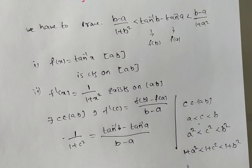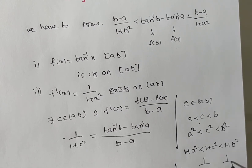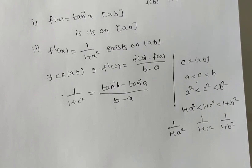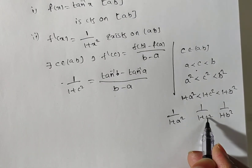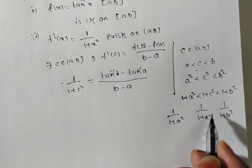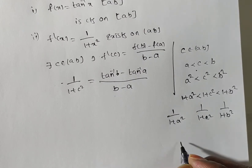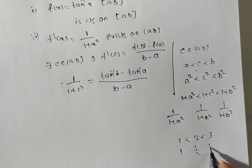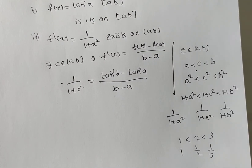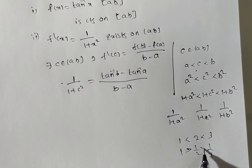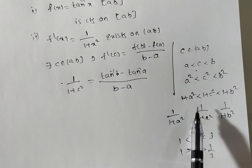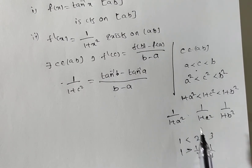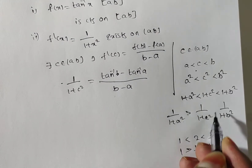Taking reciprocals: 1 by (1 plus a square), 1 by (1 plus c square), 1 by (1 plus b square). When you take reciprocals, the inequality sign reverses — for example, 1 greater than 1/2 greater than 1/3. So the reciprocal inequality becomes greater than. Therefore 1 by (1 plus a square) is greater than 1 by (1 plus c square) is greater than 1 by (1 plus b square).